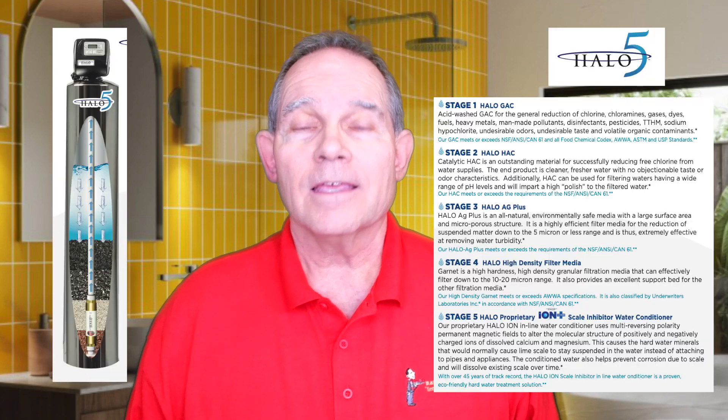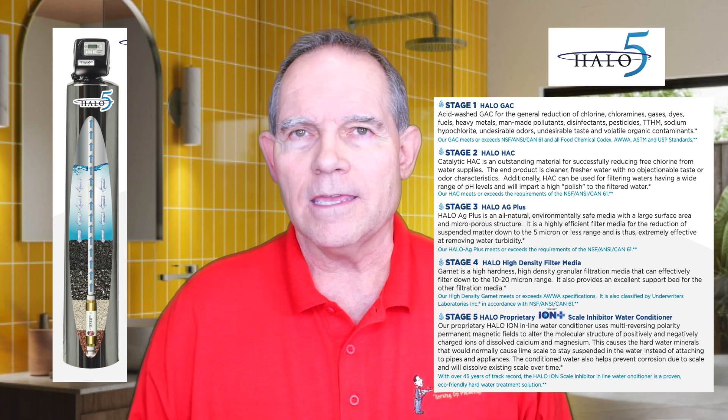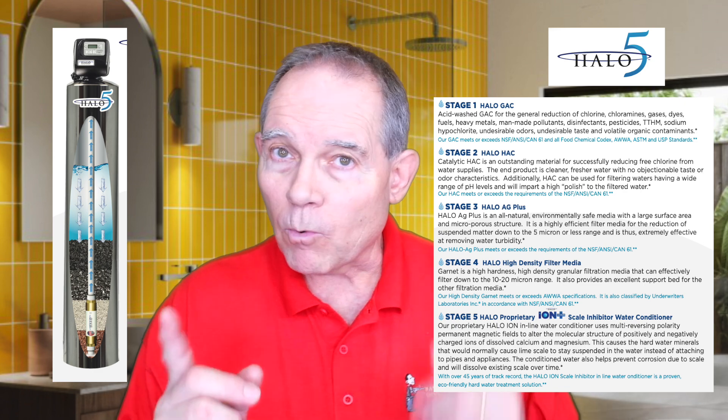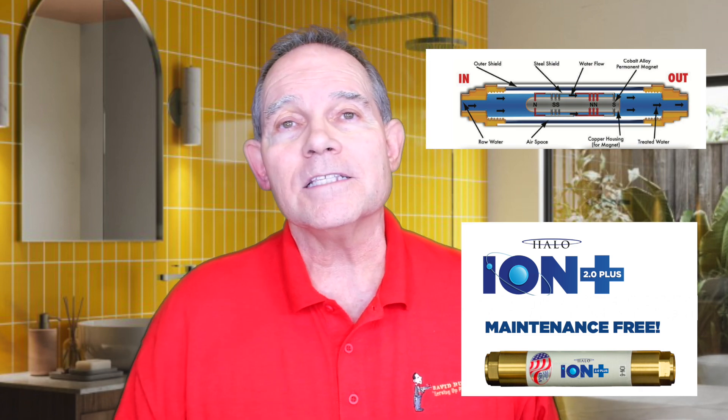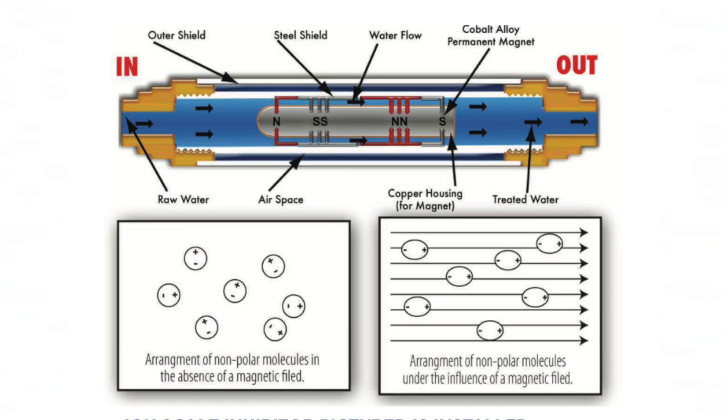The whole house filter we prefer is the Halo 5. The Halo 5 is a special filter because not only is it a water filter, but it also conditions the water by using what we call an ION inside the unit — a patented product from Halo. That ION is a series of four magnetic fields that conditions the water so that the calcium and magnesium stay suspended in the water. So not only do you have highly filtered clean water removing 95% of all chemicals, VOCs, pesticides, and all the chlorine — you're also getting water conditioning to help prevent the calcium buildup on your faucets.